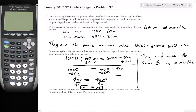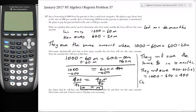Now let's state how much they will owe. Using Ian's formula: $1,000 minus $60 times 10, which equals $1,000 minus $600, equals $400.